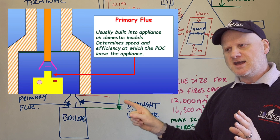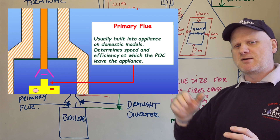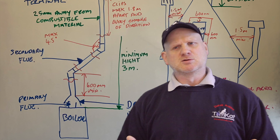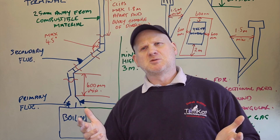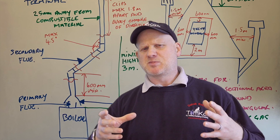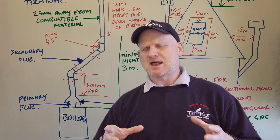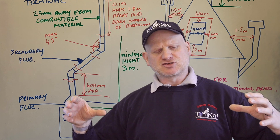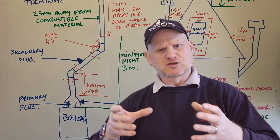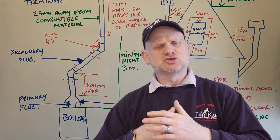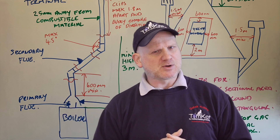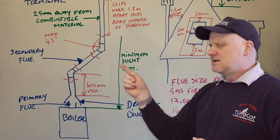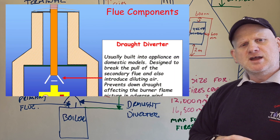The first component is the primary flue. The primary flue is built into the appliance — it's where the manufacturer funnels the products of combustion to get them ready for exiting the appliance.